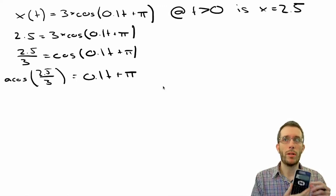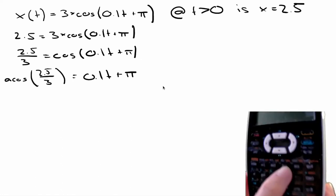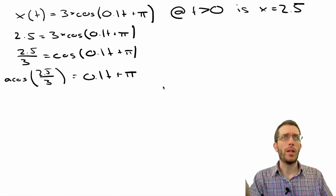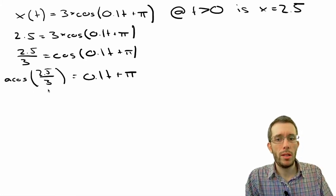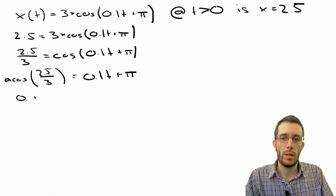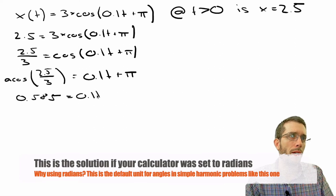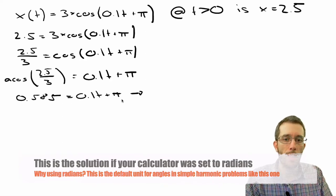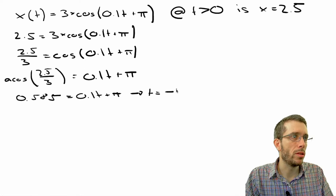Now, after hours of looking for the arccosine button on your calculator, you have finally figured out that this one is actually labeled cosine minus 1. And then you type this in and what the calculator will tell you that the inverse cosine of 2.5 over 3 is 0.585, which you set equal to 0.1 times time plus pi. So you solve this for time, you subtract pi, you divide by 0.1 and what you get is time is equal to minus 26-ish seconds.